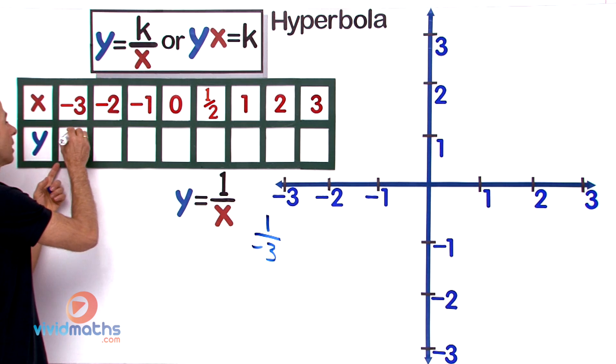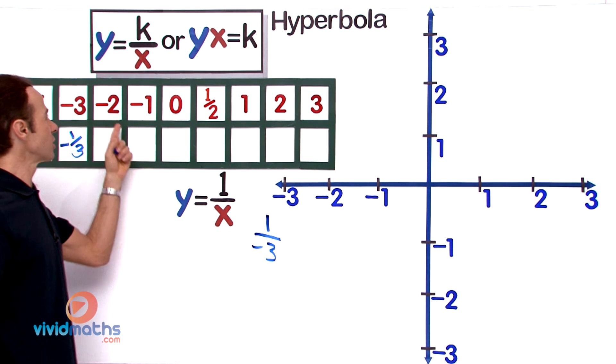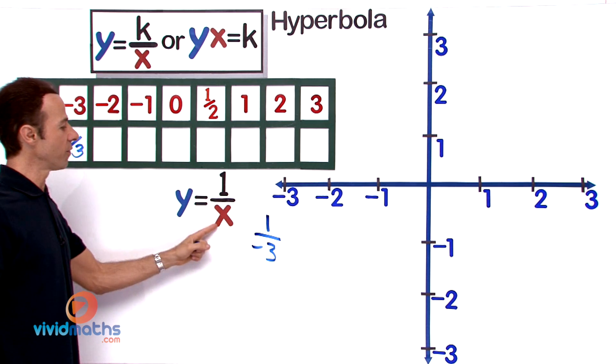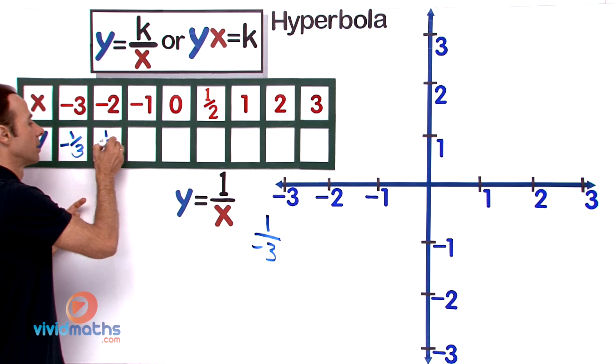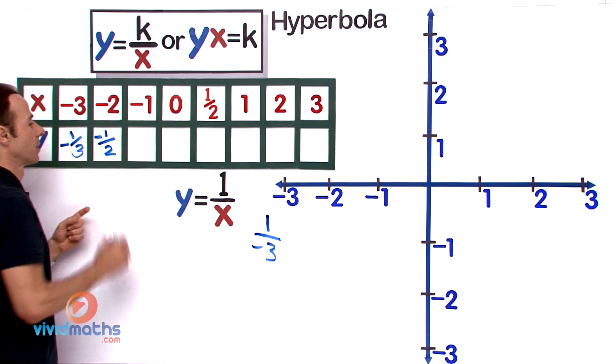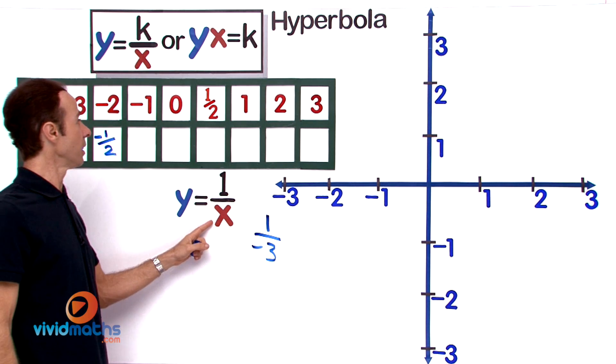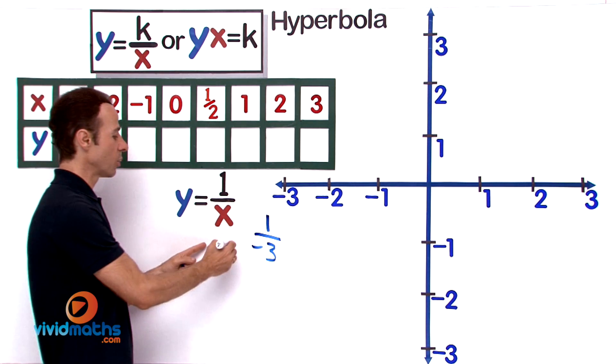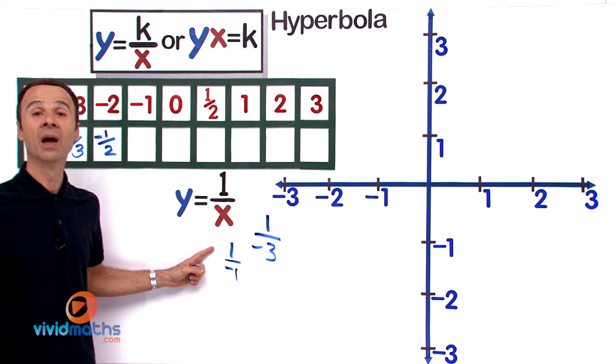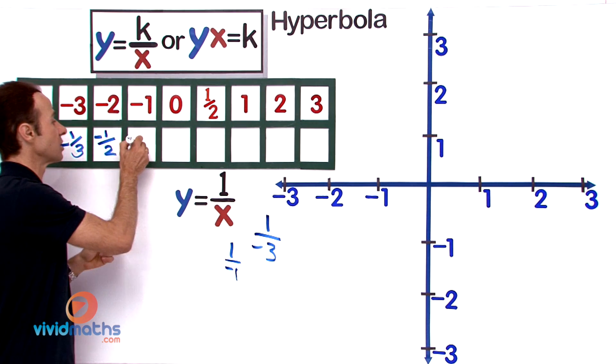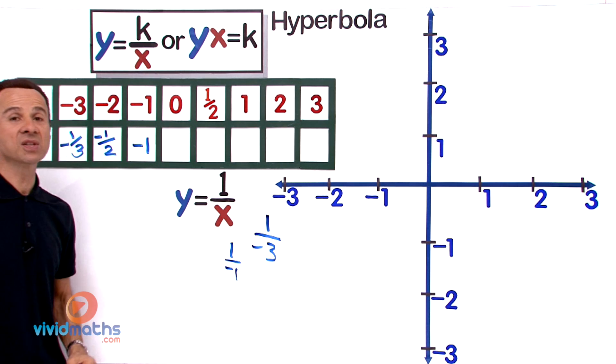Let's go to the next one. That's going to be 1 over negative 2, so let's write that down: negative 1/2. The next one is going to be negative 1, so that's 1 over negative 1, which simply is negative 1, so let's put that: negative 1.